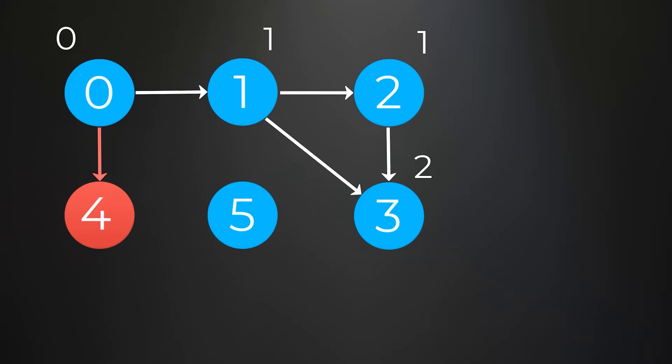Node 4 is dependent on node 0 — it has one arrow pointing to it, so it has an indegree of 1. Finally, node 5 is not dependent on any other nodes; there are no arrows pointing to it, so it has an indegree of 0. Now that we have all the indegrees, we can immediately start processing any nodes with indegrees of 0.